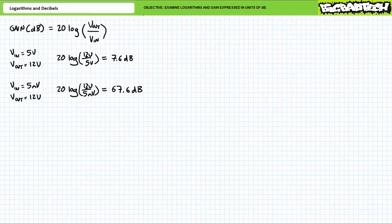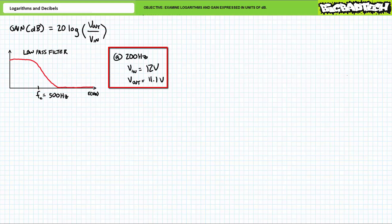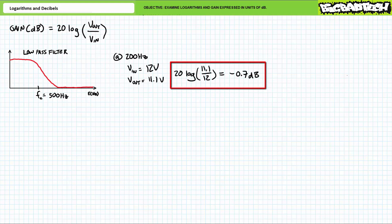Let's now examine the gain of passive systems. For occasions in which output voltage is less than input voltage, we should expect negative gain figures. Consider a low-pass filter with a critical frequency of 500 hertz. Anything below 500 hertz should pass through relatively unmolested and anything above 500 hertz should be attenuated. At 200 hertz, a 12 volt input is reduced to 11.1 volt output. 20 log of 11.1 over 12 yields a gain of roughly negative 0.7 decibels, meaning it is reduced but not by much. The low magnitude gain figure quickly tells us the output isn't affected all that much inside the pass band.